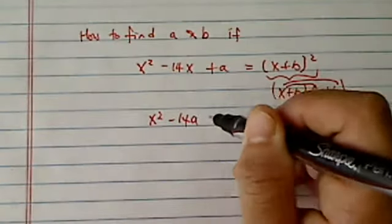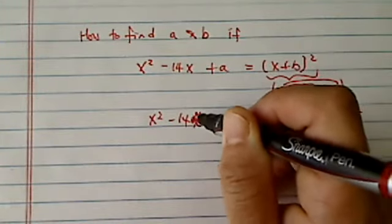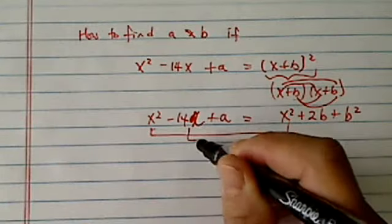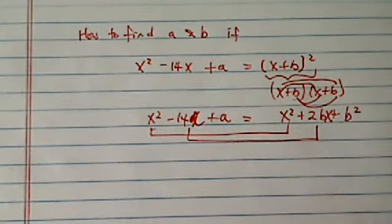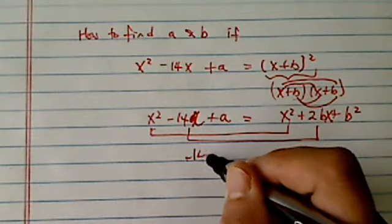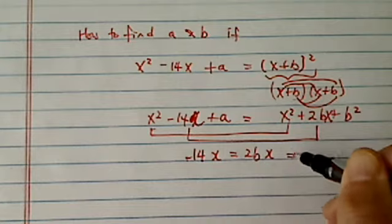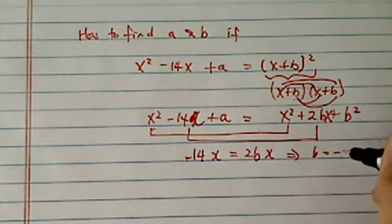Now from here, you're going to look at it term by term. So this one is already equal. Next one here, there's x over here. So it's -14x is equal to 2bx. From here you can tell b is -7.